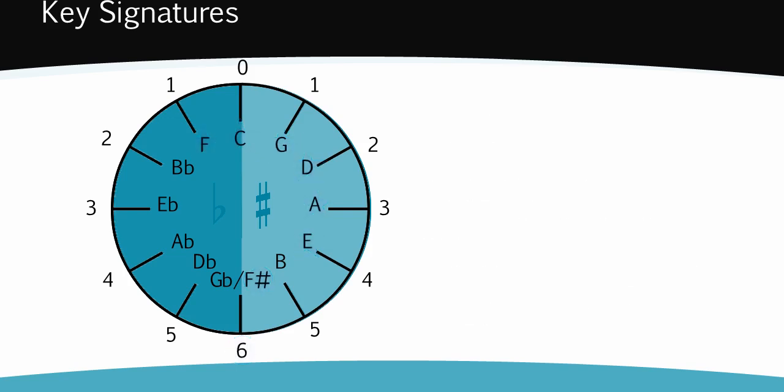On to the flat keys. F major has one flat and it is B flat. B flat major has two flats, B flat and E flat. E flat has three flats: B flat, E flat and A flat.